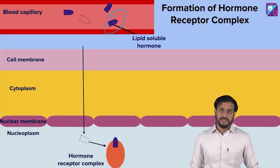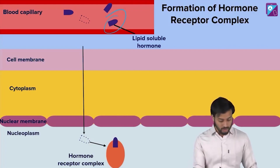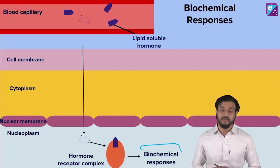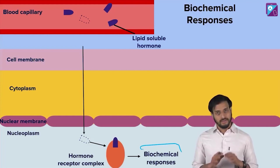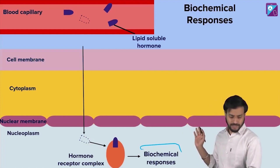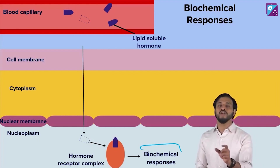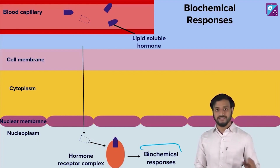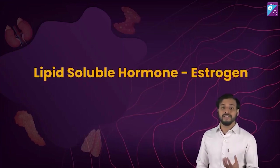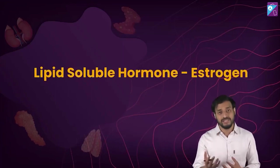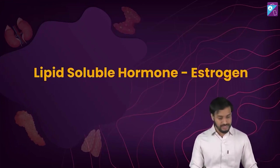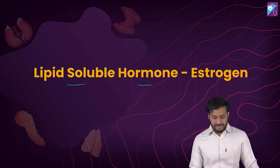These activated receptors or proteins can undergo further changes to carry out various biochemical processes or responses. The pathway is clear and simple — the basic concept you need to understand is the lipid soluble structure and the chemical composition of the membranes. Once these proteins get activated, they undergo various changes resulting in various processes, and the end result is some of the physiological changes that we see.